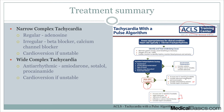You can also consider adenosine only if it's regular as well as monomorphic. These are all stable patients. But if they're unstable — persistent tachycardia causing hypotension, altered mental status, shock, or similar findings — what you're going to be doing is cardioversion, regardless of whether it's narrow or wide. Always remember: cardioversion is for unstable patients, and medical management is for stable patients.